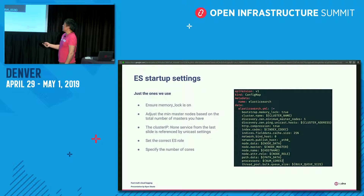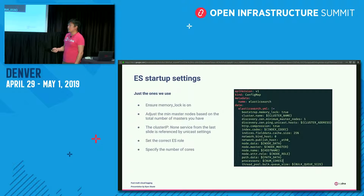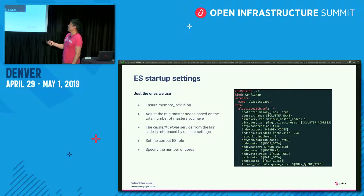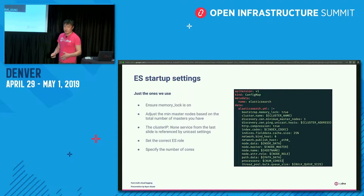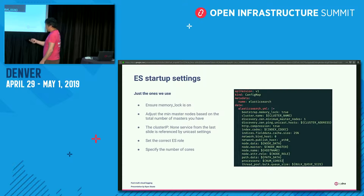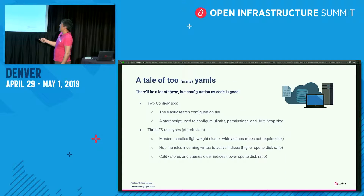As far as startup settings, the big ones to call out are the first two. Ensure memory lock is on — you want to be able to lock memory for Elasticsearch and also prevent the OS from locking parts of memory that you actually need as the service. The second point: adjust the minimum master nodes based on the total number of masters you have. That logic is akin to having a plenum versus a quorum — you want to maintain some majority for whatever total theoretical number of masters you have. You also want to specify the correct role and number of cores, and whether you're going to be focused on writes or reads.